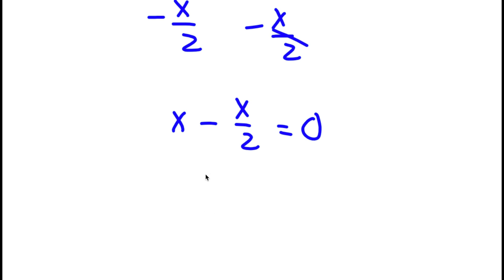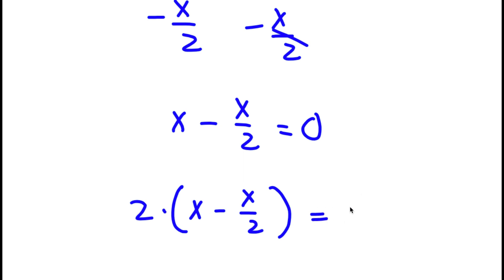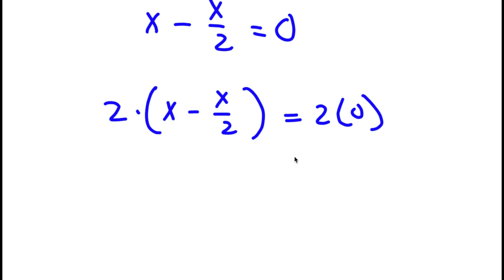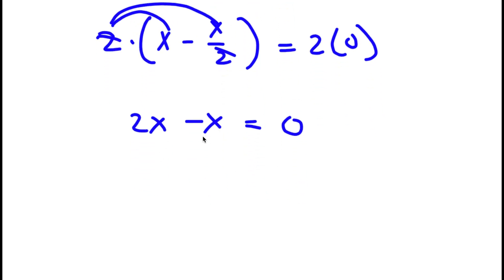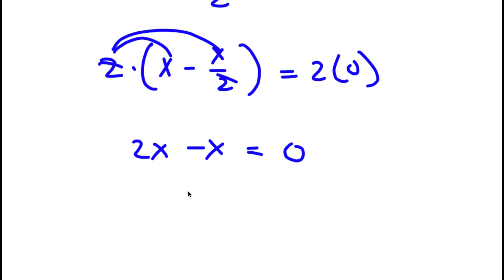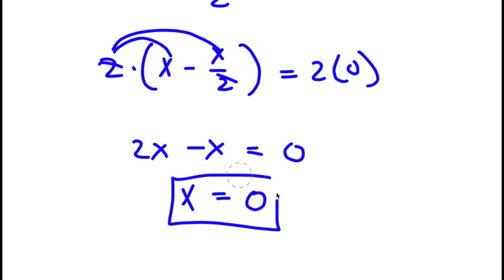Now I'm going to multiply both sides by 2, so I have x minus x over 2, times 2, is equal to 2 times 0. I'll distribute the 2 to all terms: 2 times x is 2x, and 2 times negative x over 2 — the 2s cancel — leaves negative x. This equals 2 times 0, which is 0. So I have 2x minus x is equal to 0, and 2x minus x is simply x. So x is equal to 0.